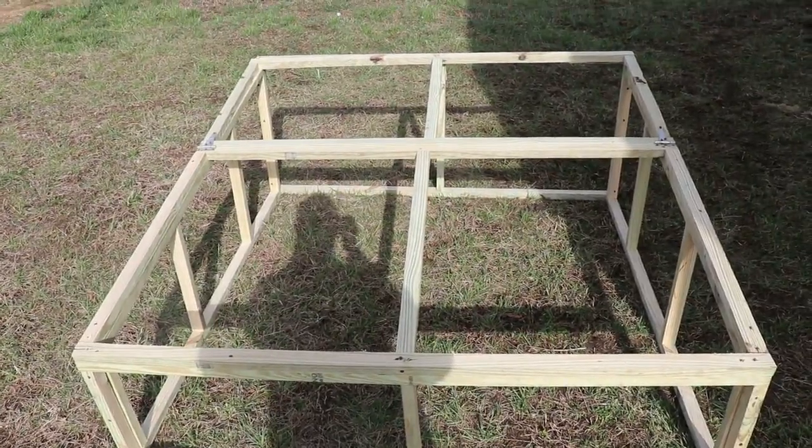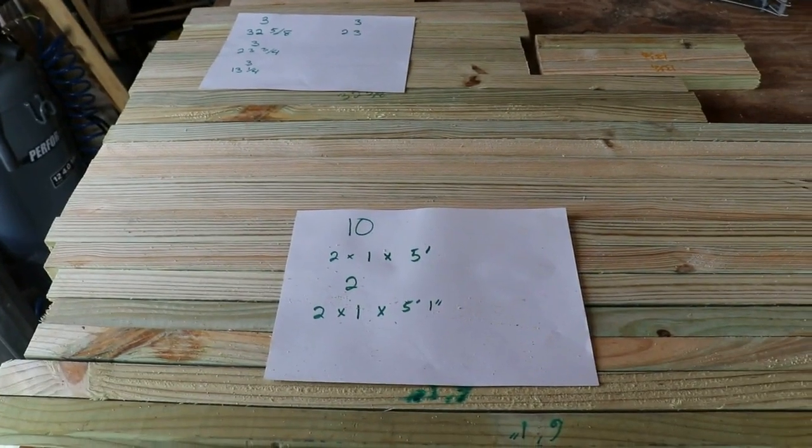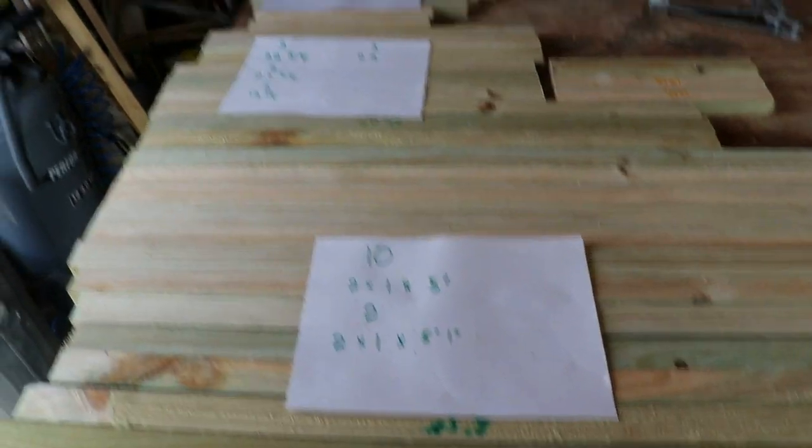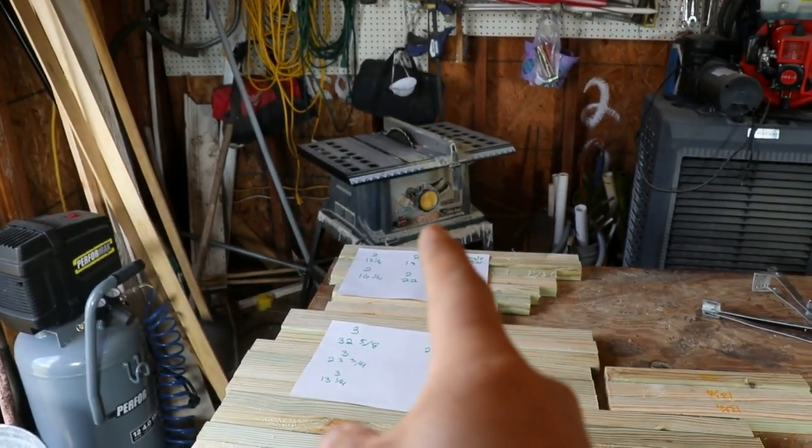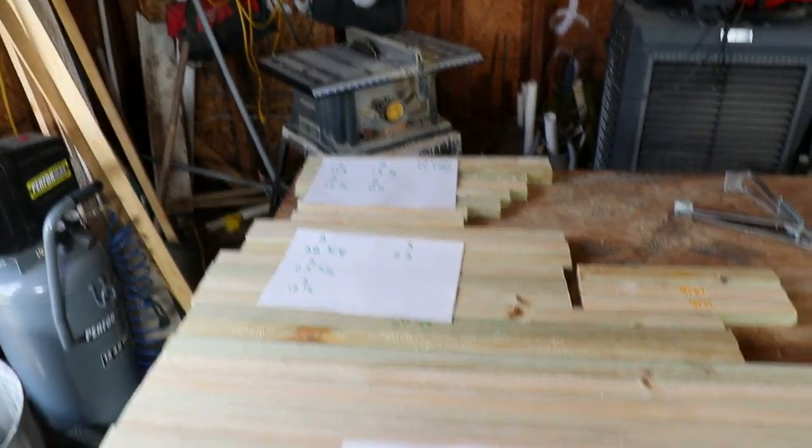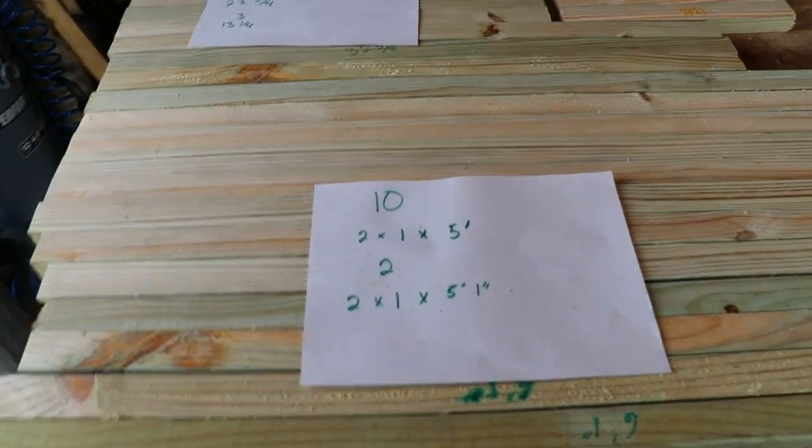Here we go. So what materials do we need? All of these are two by ones. I took two by fours and used treated wood and cut them down on the table saw so they're all two by ones right now. What do we need?